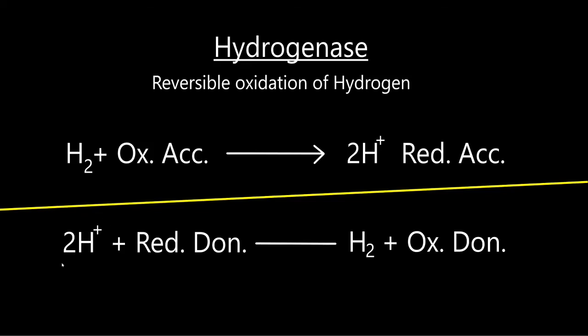It sees the 2H+ and sees its positive charge, meaning some electrons are lacking. And it gives them to it. So now the H2 molecule is neutrally charged, has no charge, and the donor becomes oxidized, meaning it lost electrons.